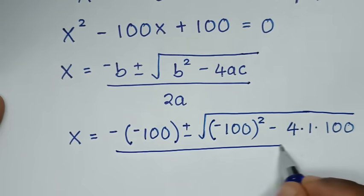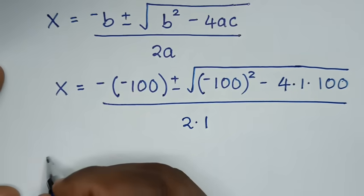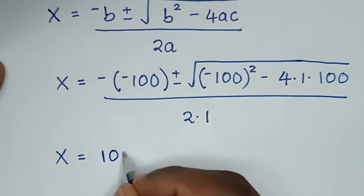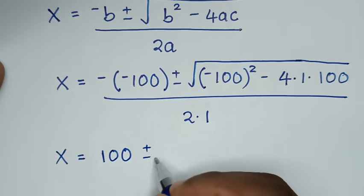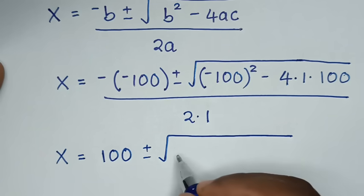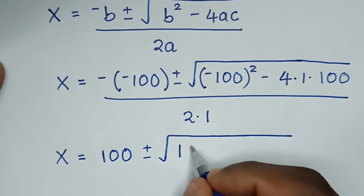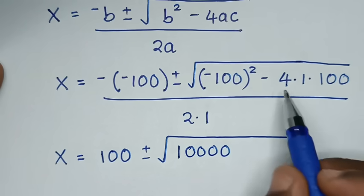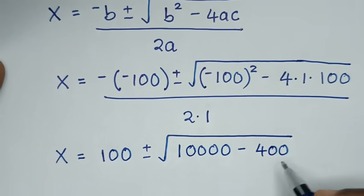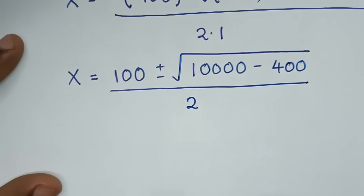Substituting in, x is equal to negative b, the coefficient of x which is negative 100, so negative of negative 100 is positive 100. Plus or minus square root of b squared which is negative 100 squared, minus 4 times a which is 1, times c which is 100. All over 2 times a which is 1.